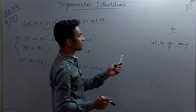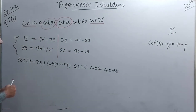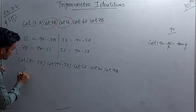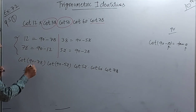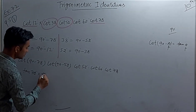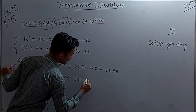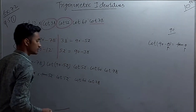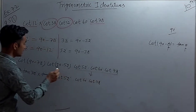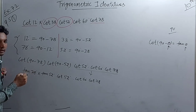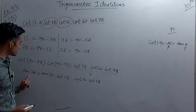Applying the identity cot(90° - θ) = tan θ: cot(90° - 78°) becomes tan 78°, and cot(90° - 52°) becomes tan 52°. So now we have tan 78° paired with cot 78°, and tan 52° paired with cot 52°, along with the remaining cot 60°.